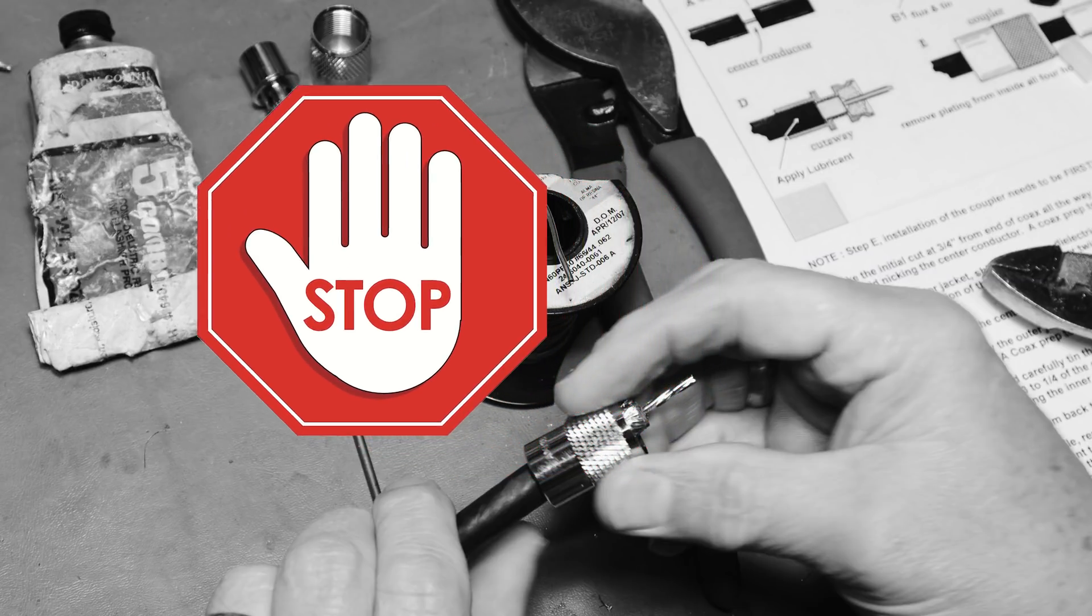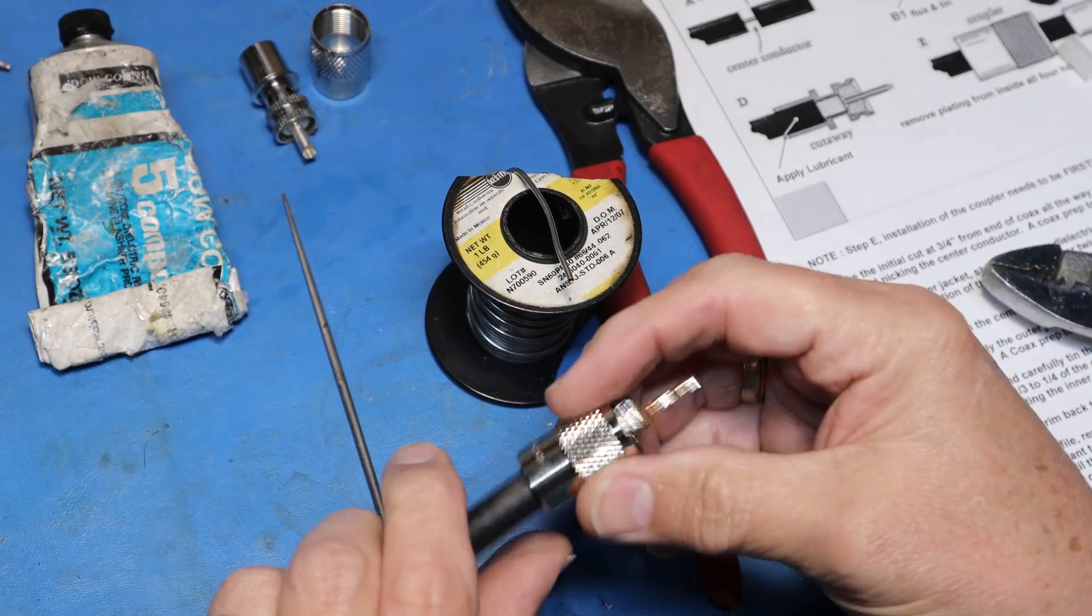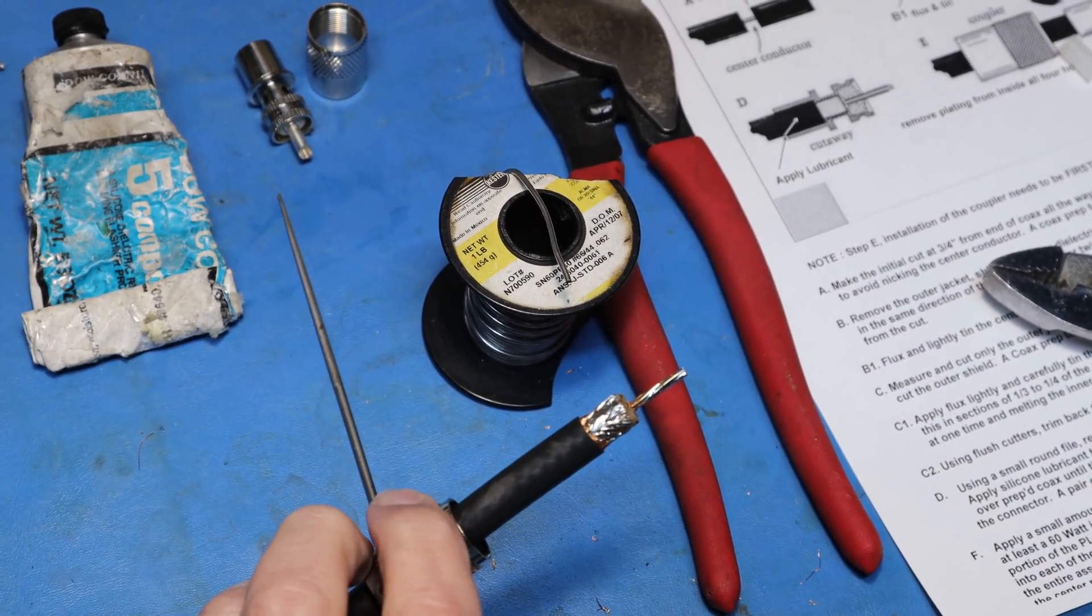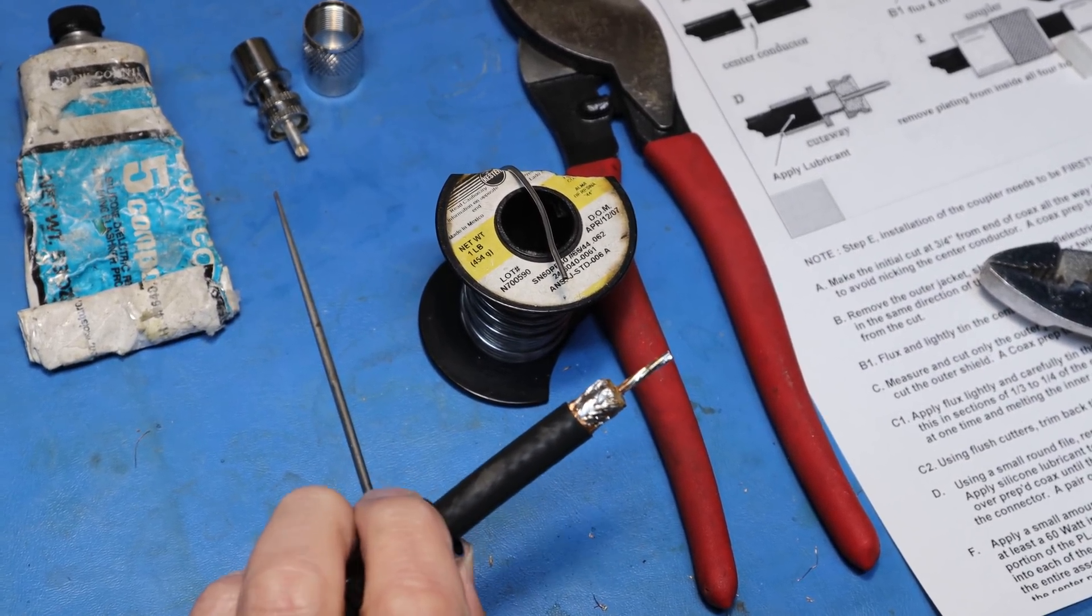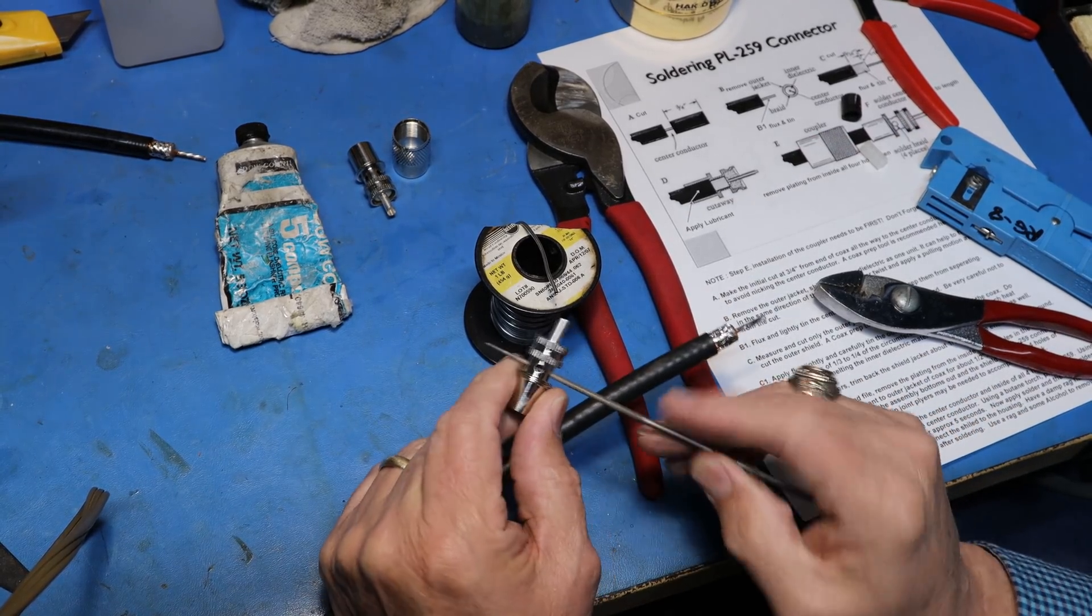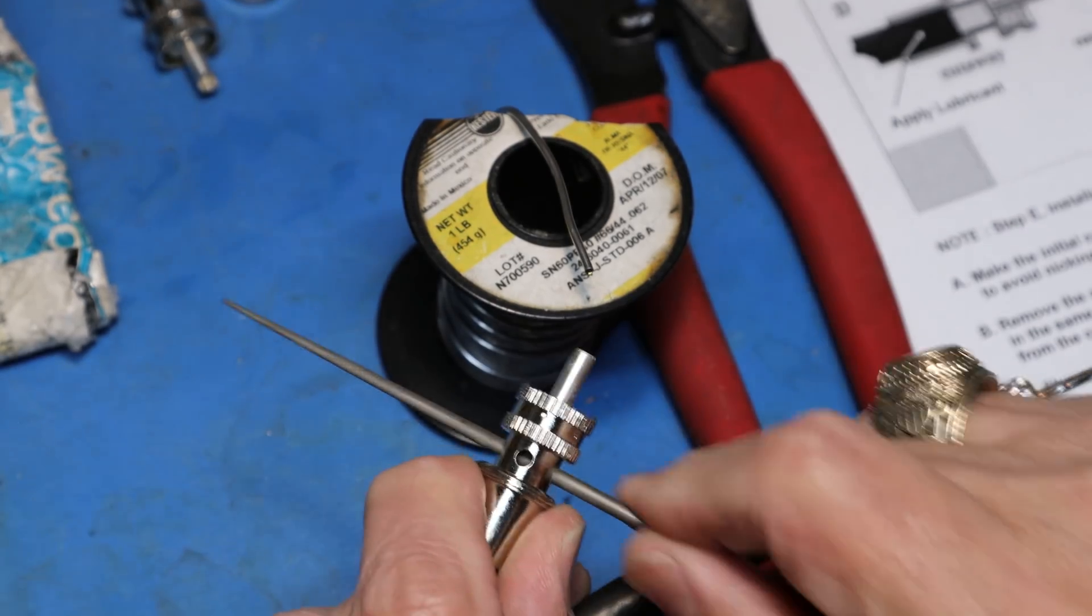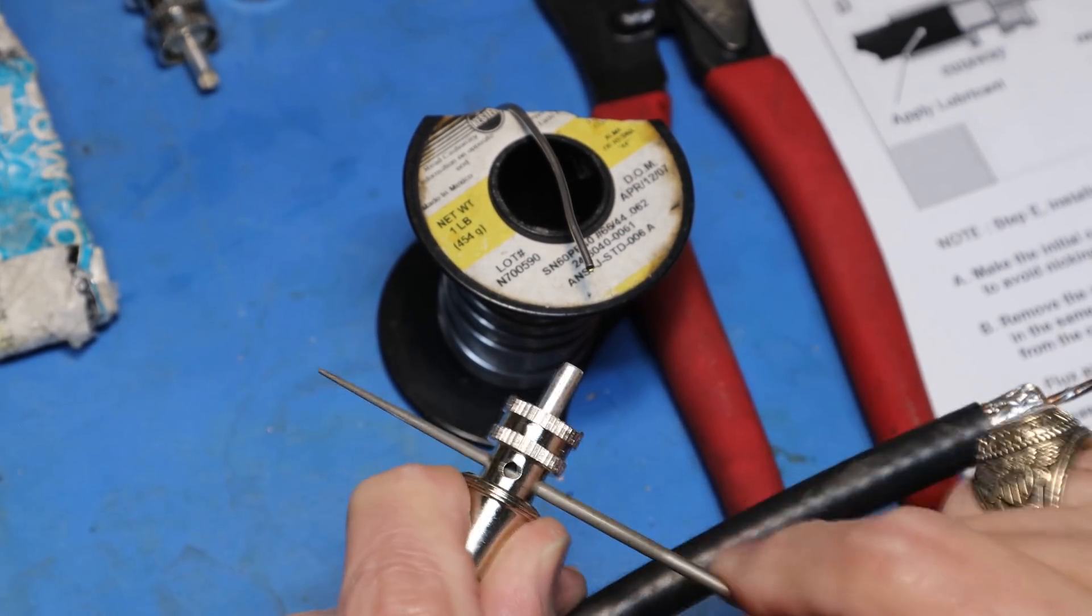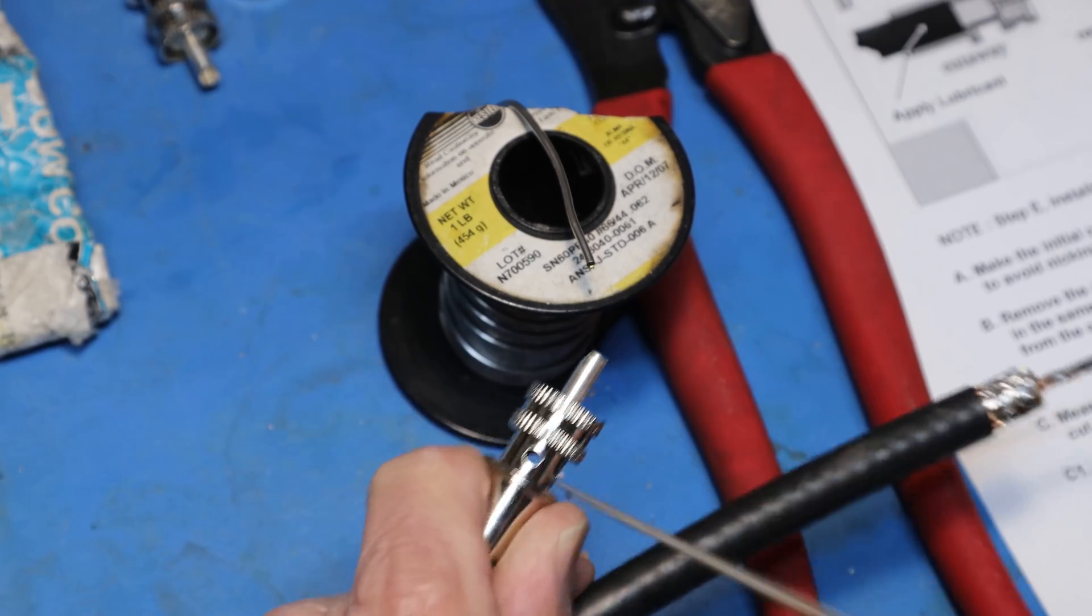Now we will install the barrel over the coax. It is super important that this is done as once you solder the rest of the connector on, you will not be able to install this barrel. I now take a small file and run it through the small openings of the connector to remove the plating. This will greatly help the solder process.